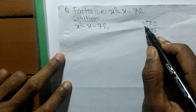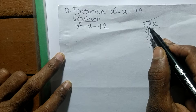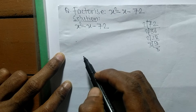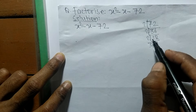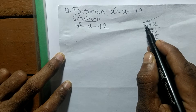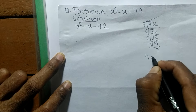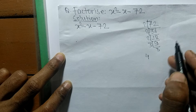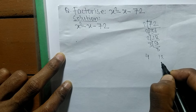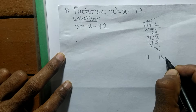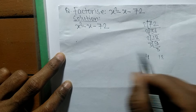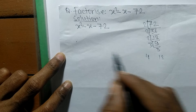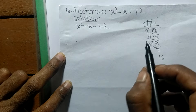From these prime factors we have to find two numbers such that their sum gives minus 1. First, let's try: 2 times 2 is 4, and 2 times 3 is 6, and 6 times 3 is 18. So 4 minus 18 is 14, and 4 plus 18 is 22 — neither gives us 1, so this combination doesn't work.